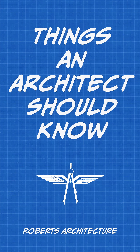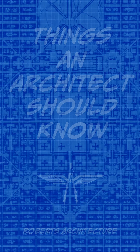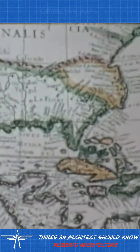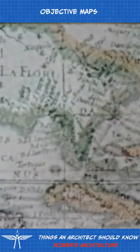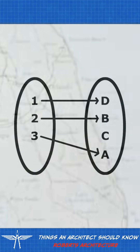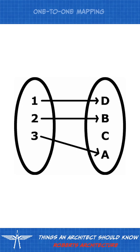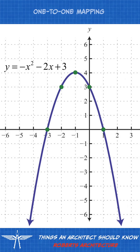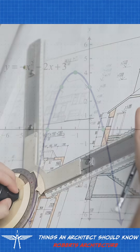Things an architect should know: abstract maps. Modernism created objective maps and models of the world. Science creates concepts and creates one-to-one maps between ideas and objective data.